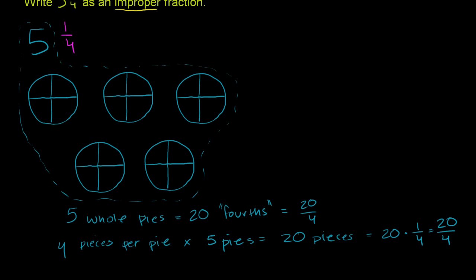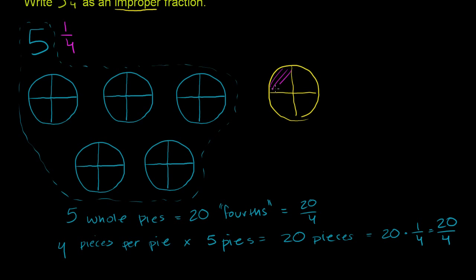Now the 1/4 right here represents literally 1 more fourth of a pie, or 1 more piece of a pie. So let me draw another pie here, cut it into 4 pieces. But this 1/4 only represents 1 of these pieces — the denominator tells us how many pieces, and the 1 tells us how many of those pieces we're dealing with. So it's just this 1 piece over here. That right there is the 1/4.